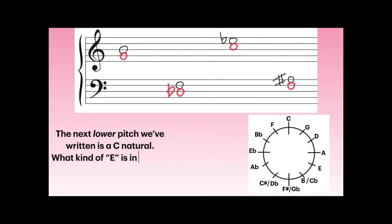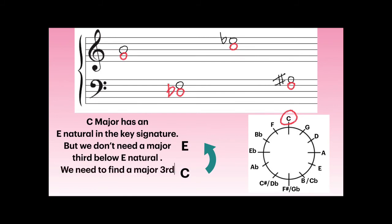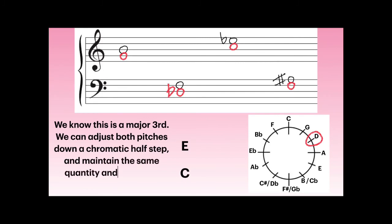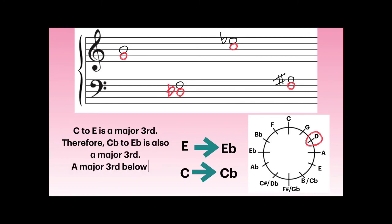The next lower pitch we've written is a C natural. What kind of E is in the key signature for C major? In the key of C major we have no sharps and no flats; therefore, C to an E is a major third. But we don't need a major third below E-natural — we need a major third below E-flat. We adjust both pitches by the same amount: if C goes down to a C-flat and E goes down to an E-flat, we keep our major third. A major third below E-flat is C-flat.